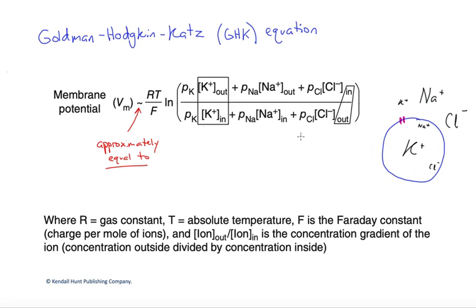You might ask, why don't we include another ion like calcium or bicarbonate or any other ion. The reason typically is that they tend to have a very low resting permeability. We'd be multiplying them by zero, so we can just leave them out.